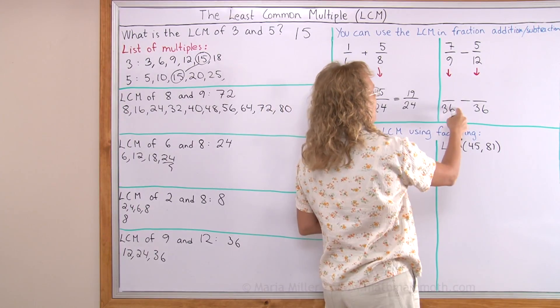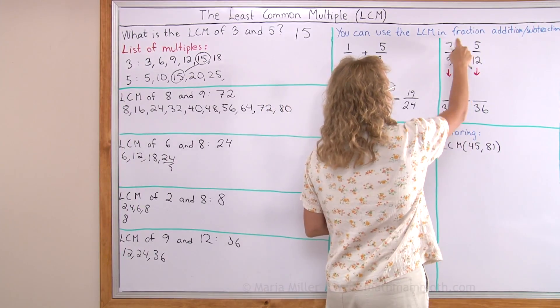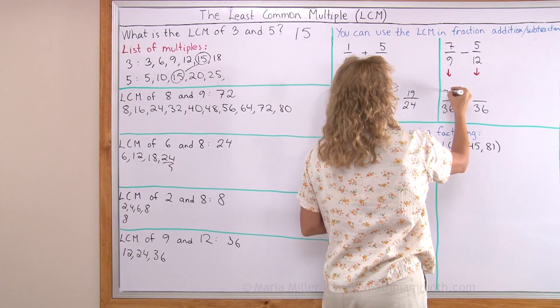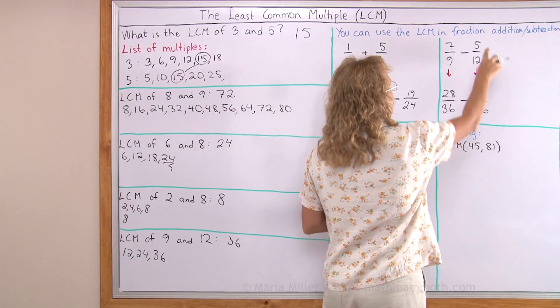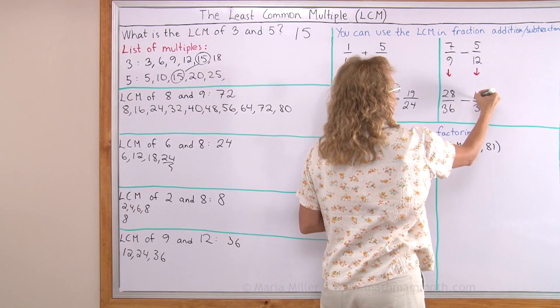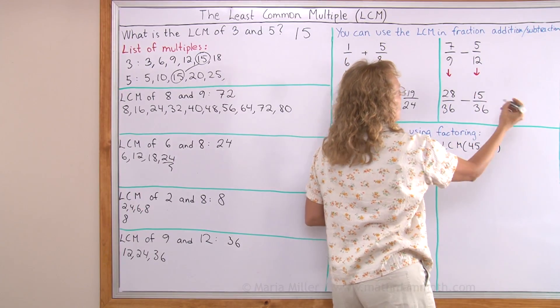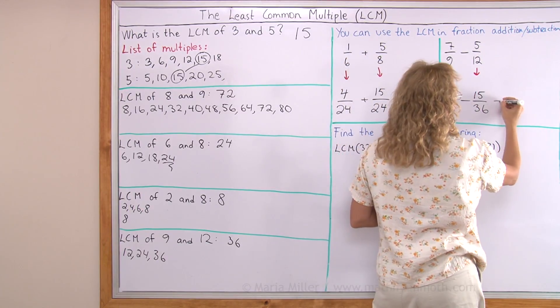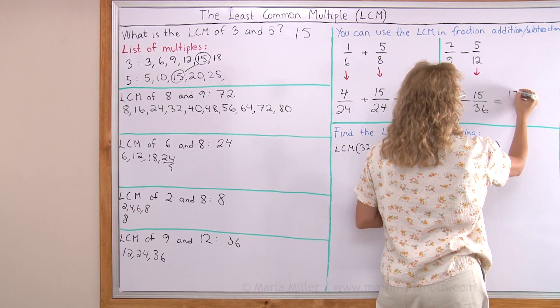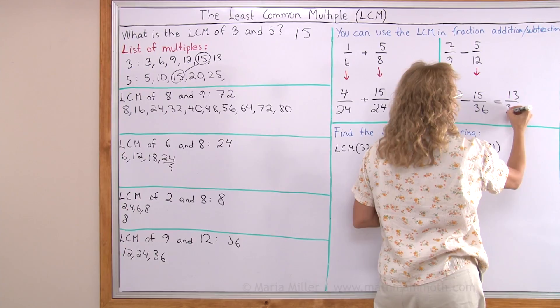Here, 9 times 4 is 36, so 7 times 4 gives 28. And 12 times 3 gives us 5 times 3, which is 15. So 28 minus 15 is 13 over 36.